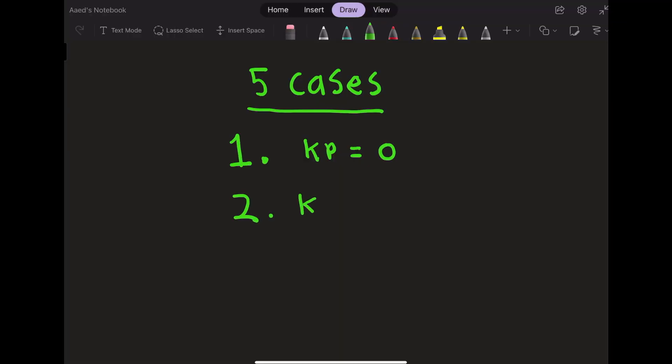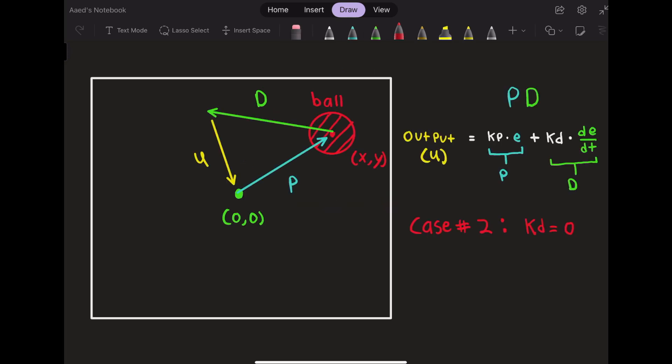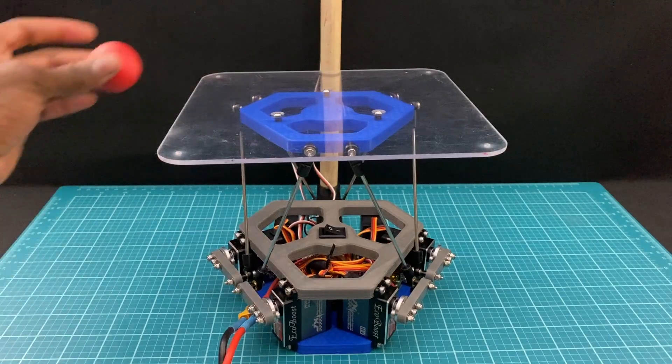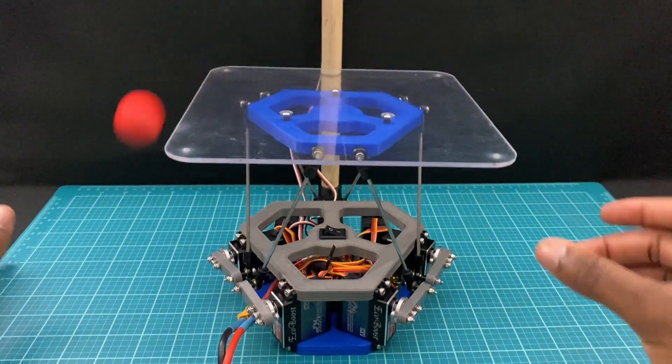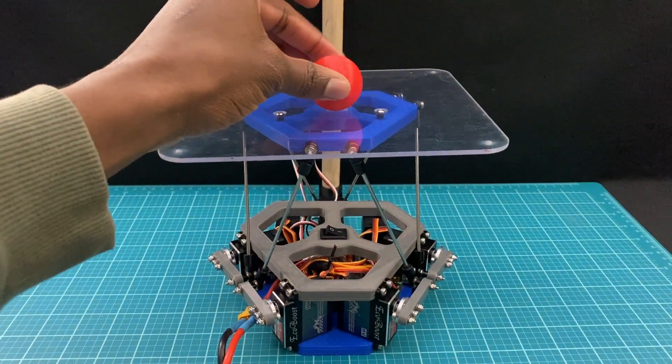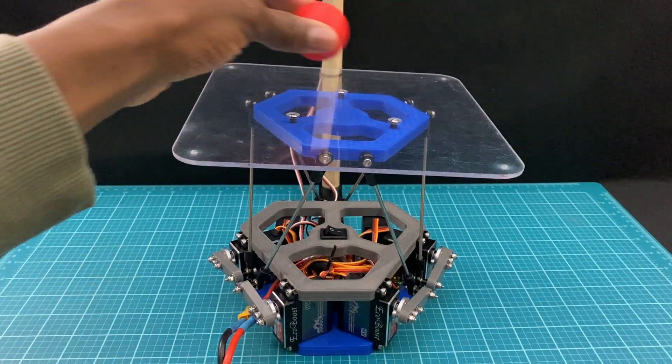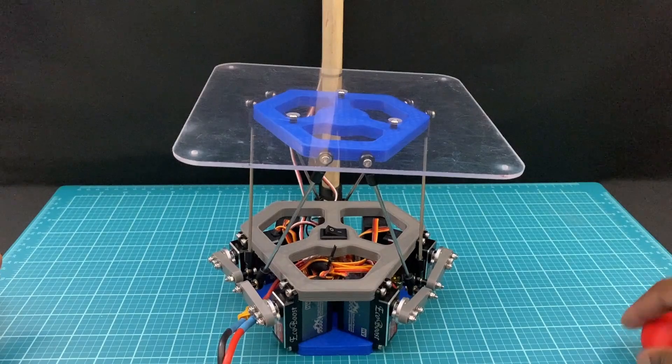The next case occurs when kd is set to zero. In this case, there is no derivative vector, and the robot only accounts for the ball's position. As you can see, the robot only tries to move the ball towards the center without accounting for its velocity. Without accounting for the ball's velocity, the robot has no way of knowing how sharp to make its movements.